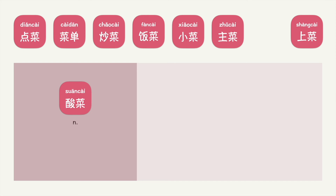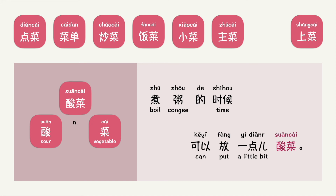酸菜 is a noun. 酸 means sour, 菜 means vegetable. Put into context, you can say: 煮粥的时候可以放一点酸菜。 — Sour vegetables. What do you think 酸菜 means? Typically, if vegetables are sour, they must be pickled. 酸菜 means pickled vegetables.